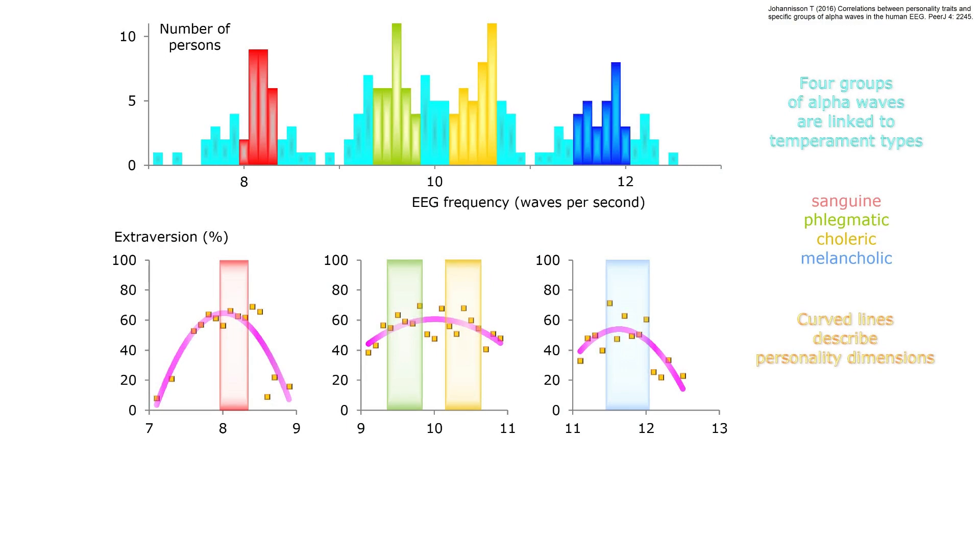This figure shows the relationship between temperament and personality dimensions. Four groups of alpha waves correspond to four types of temperament. People in the centers of the alpha groups have traits typical of classical temperaments.